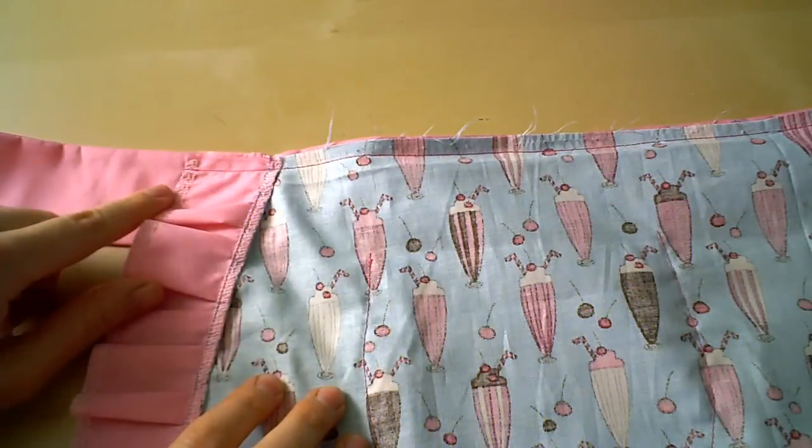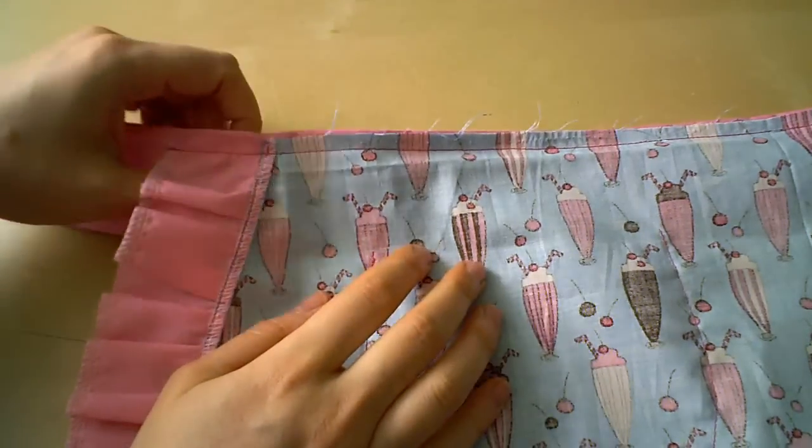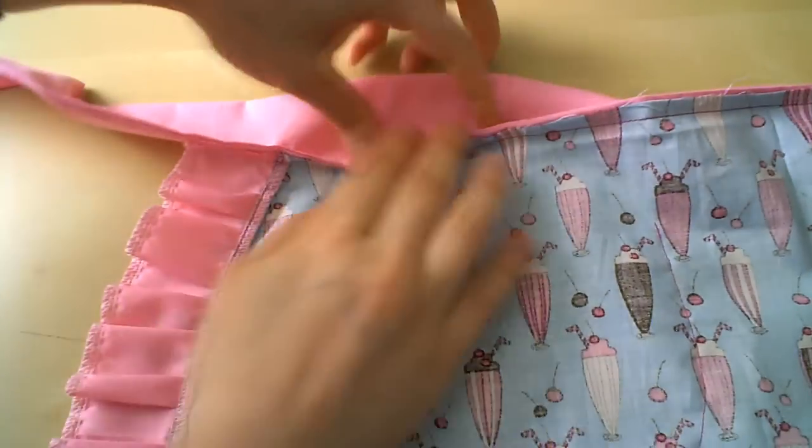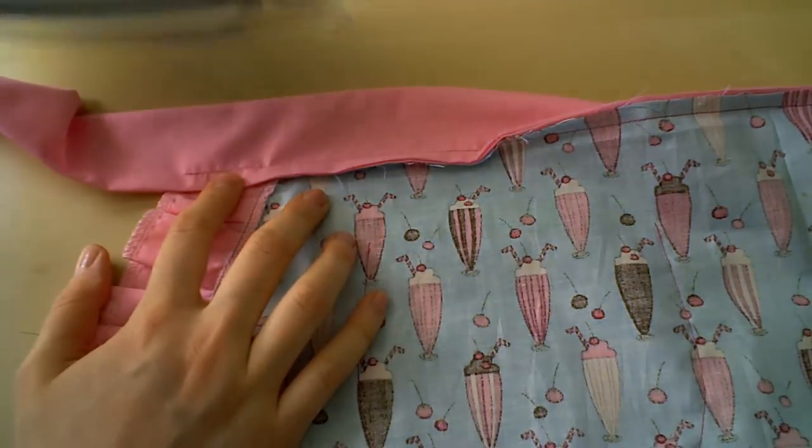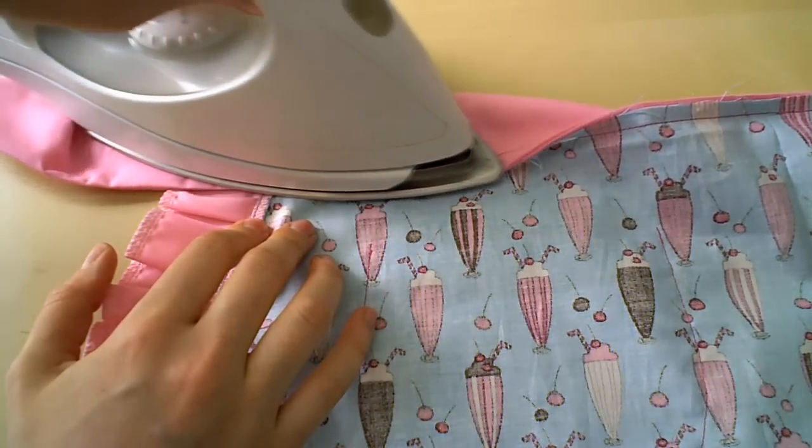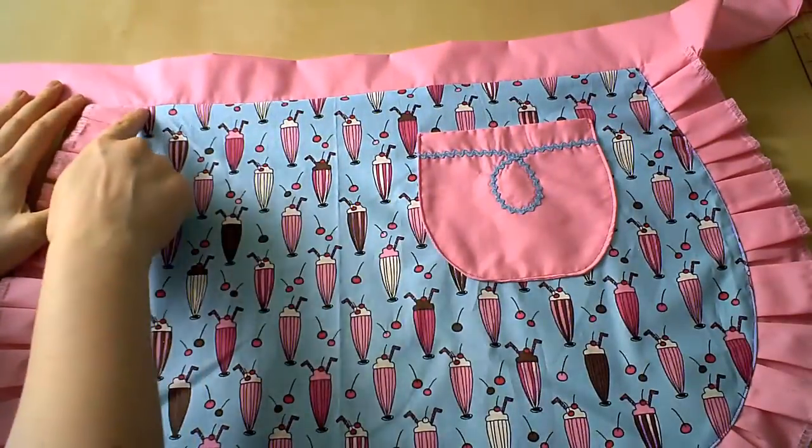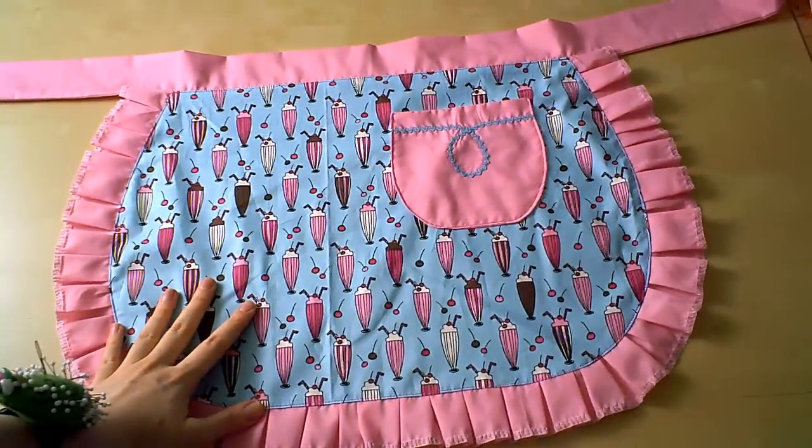Sew the apron to the waistband using a 3/8 inch seam allowance. Because we left that gap, when we press the seam towards the apron, it will completely conceal the raw edges. And just like I said, now it's time to press. When you're finished pressing, flip the apron over and topstitch the seam down.